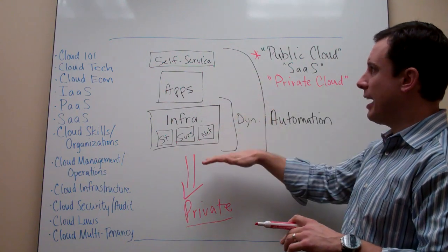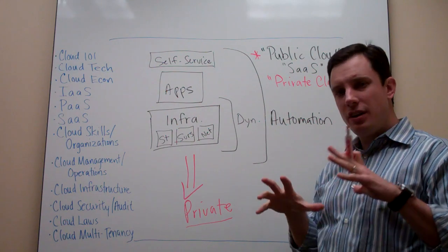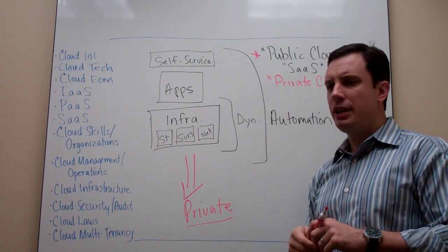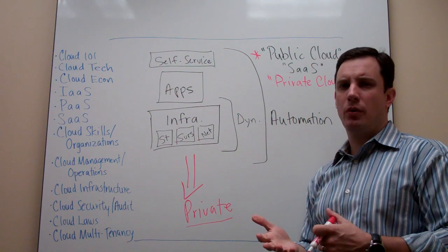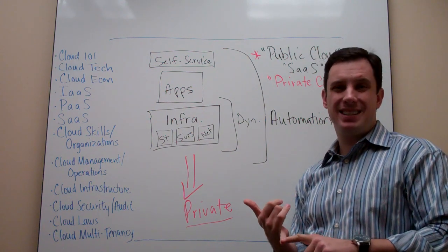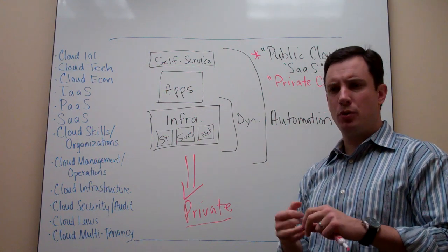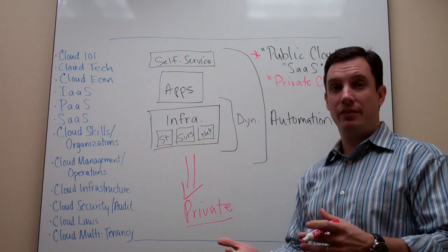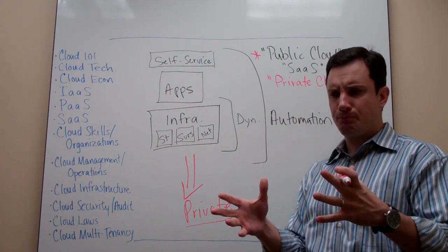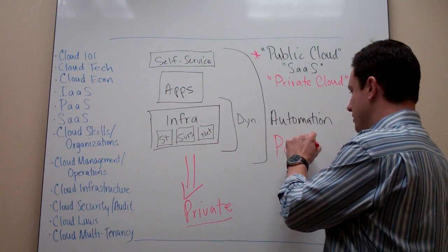What we're seeing is that the best practices for how to build a cloud environment — dynamic, highly automated, self-service aware, supporting multiple applications — are becoming more well-known, whether for private or public resources. Companies are recognizing that this technology evolution opens up huge opportunities: run legacy applications more efficiently, and look at new development environments to build new applications where you have a competitive advantage. That's called Platform as a Service, PaaS.